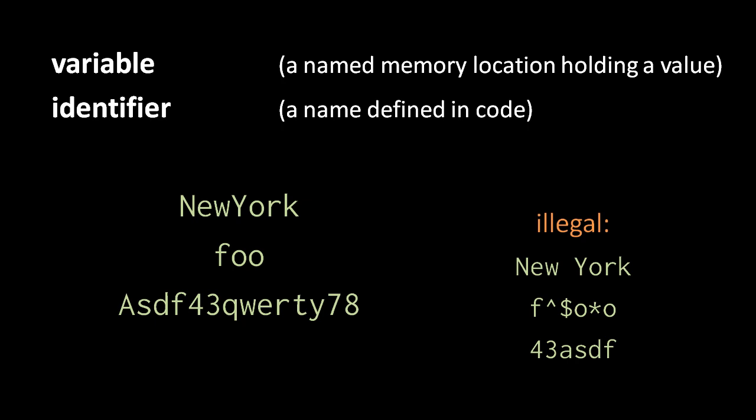The top one here, New York, is not valid because you cannot have spaces in your identifiers. The second one isn't valid because you cannot have symbols like the caret sign, the dollar sign, or the asterisk. And 43-ASDF is not valid because while identifiers may contain numerals, they cannot begin with numerals, they must begin with a letter.